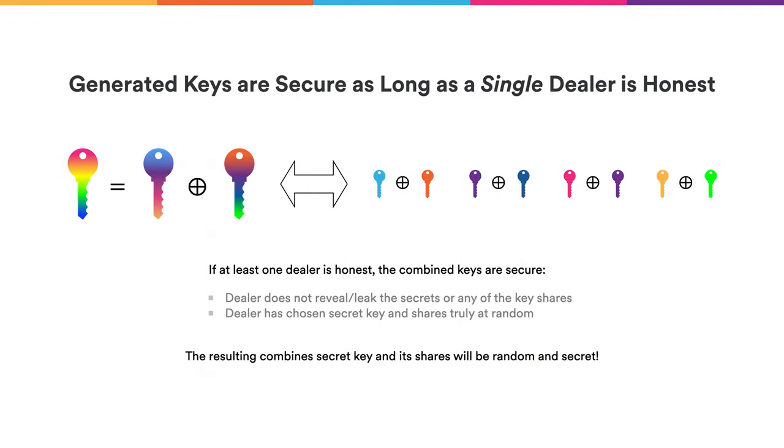By having multiple dealers do sharings and combining them, we are guaranteed that as long as a single dealer is honest, the whole scheme is secure. For the scheme to be secure, we require keys that are generated with perfect randomness and are not leaked. Due to the homomorphic operation, as long as one of those keys was purely random and not leaked, the resulting key is also purely random and kept secret. This is how we non-interactively generate secret and public keys for subnets — this is how the NNS subnet generates new subnets.